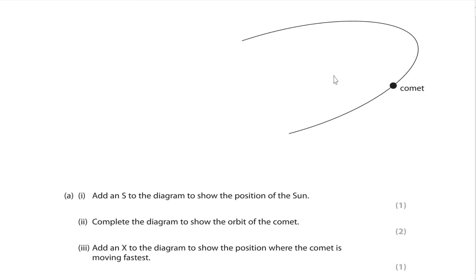Add an S to the diagram to show the position of the Sun. Remember, comet revolves around the Sun, keeping the Sun in the focus. So the correct answer is S - this is the position of the Sun.